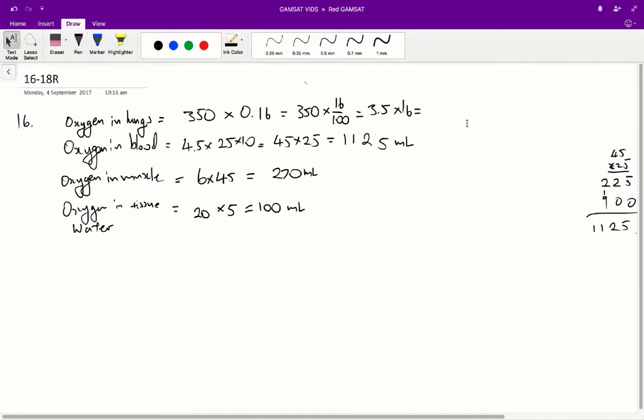Question 16 to 18 in the ACER red paper. Question 16. According to Table 1 of the following, most of the seal's oxygen is located in.